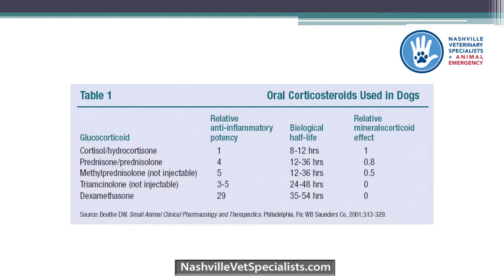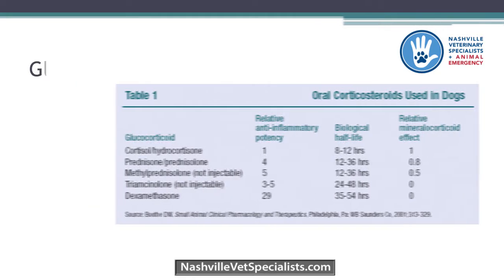Pred is my first choice steroid. For dexamethasone, I just move the decimal point — so 2.2 mg/kg pred equivalent becomes 0.2 mg/kg dex. I usually use methylprednisolone in place of pred when it's doing the job I want but the dog has behavioral side effects or excessive PU/PD, because every drug is different for every dog and they might tolerate it better.